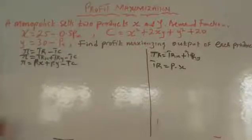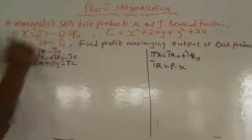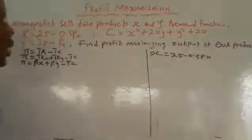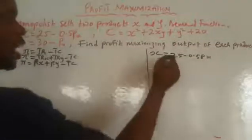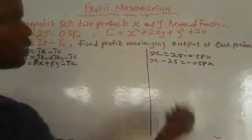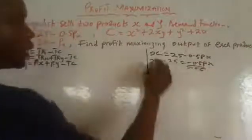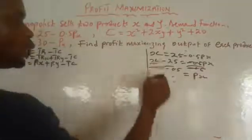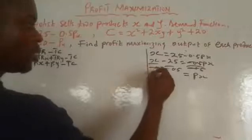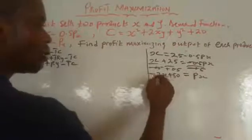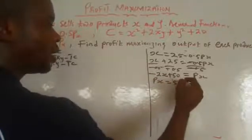Now we need our P. If we look at the question, we are not given P directly, so we are going to derive P from the demand function. Since we have the function X equals 25 minus 0.5Px, we can make Px the subject of the formula. Collecting like terms: X minus 25 equals minus 0.5Px. Dividing both sides by minus 0.5 gives Px equals 50 minus 2X. So my price function for X is Px = 50 minus 2X.